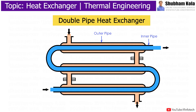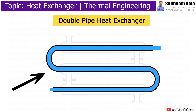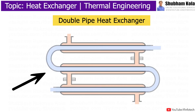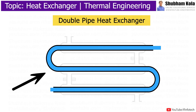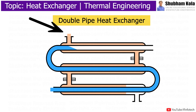Double pipe heat exchangers are used for transfer of heat between two liquids without mixing them. In this arrangement, one pipe is held concentrically inside a larger pipe. The inner pipe acts as a conductive barrier where one fluid flows through the inner pipe and the other fluid flows around it through the outer pipe.